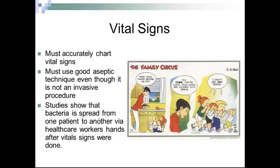You must accurately chart vital signs. When we chart a pulse, it is P, then the number, and beats per minute (BPM) after. For respirations, we have R, the number, and then a slash per minute. The blood pressure has the systolic — the top number — by a slash, the diastolic — the bottom number — which arm it was taken in, whether the patient was sitting, and whether it was the upper or lower arm. Those are all very important things we need to record as the medical assistant.